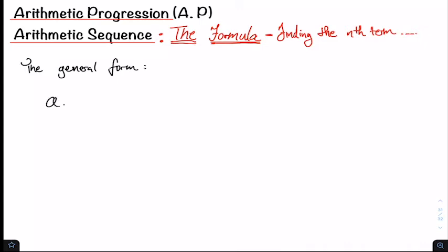We have our sequence a sub n which is equal to the first term a, the second term is going to be a plus the common difference, and the third term is going to be a plus the common difference plus the common difference.